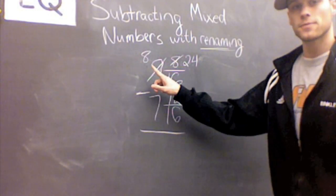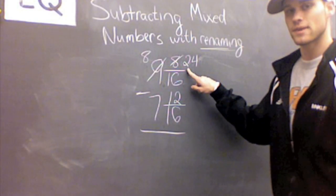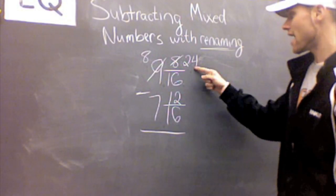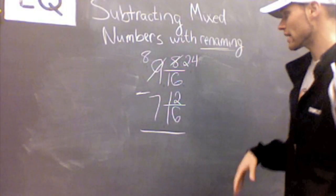So I regrouped, got a new number over here, took one out, and I added my denominator to my numerator to get 24 as a new numerator. Now looking at the problem, I can go ahead and subtract. So this is going to be real quick and easy.